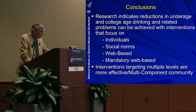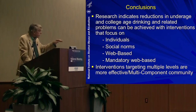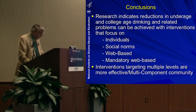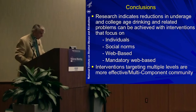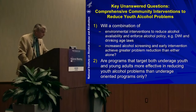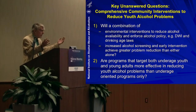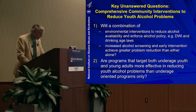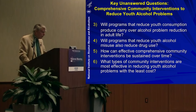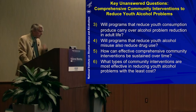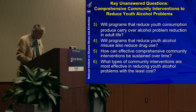In conclusion, we have evidence that we can reduce underage and college drinking by intervening at multiple levels — individual, social norms, web-based, mandatory web-based, policy, and multi-component community interventions. There's no silver bullet; the more levels at which we intervene, the greater the likelihood of reducing problems. Unanswered questions remain: Will environmental interventions combined with increased screening and brief intervention be more effective than either alone? Are programs targeting both underage and young adults more effective than those targeting underage only? How can we sustain these things over time, and what interventions are most effective at the least cost?